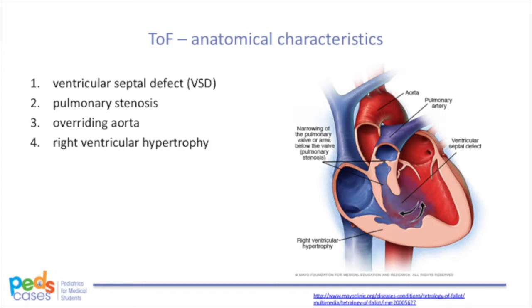In fact, what has been described is a common presentation of Tetralogy of Fallot. Tetralogy of Fallot is a cyanotic congenital heart disease that arises due to problems during embryological development as the heart undergoes septation. It involves four anatomical characteristics: 1. A ventricular septal defect (VSD). 2. Pulmonary stenosis. 3. An overriding aorta. And 4. Right ventricular hypertrophy.